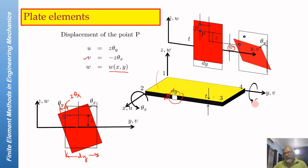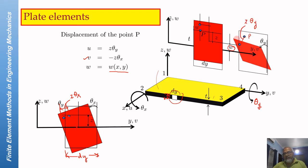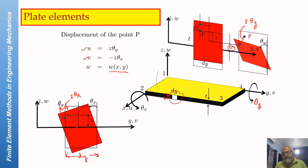Due to theta Y applied here, this cross-section can tilt in either the forward or backward direction. A point P located here would move by an amount equal to Z times theta Y, which has a component Z times theta Y times cos(theta Y). Taking cos(theta Y) equal to 1 for small theta Y, U is given by Z times theta Y. So for a small elemental cross-section, it only translates or rotates because of the deformation of the plate.